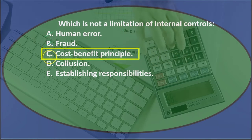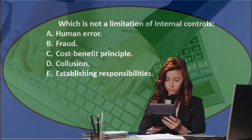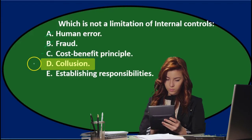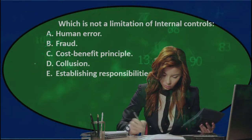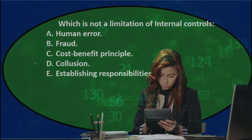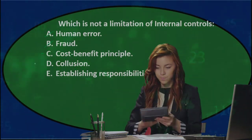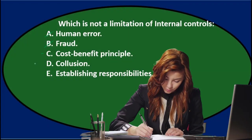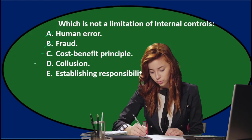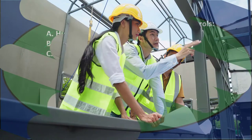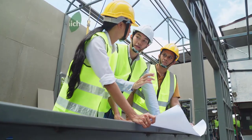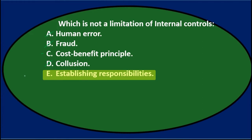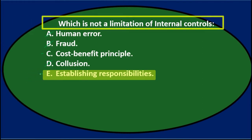Cost-benefit principle — I'm not totally sure, so I'll keep that for now. Collusion is one of the first limitations you should think about — two people getting together to circumvent the system, especially separation of duties. So collusion is a limitation. Establishing responsibility doesn't sound like a weakness, so I'll narrow it down to C and E.